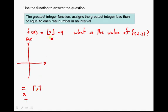But let's take a look what this means. And basically it says that greatest integer function assigns the greatest integer less than or equal to each real number in an interval. So I know there's a whole bunch of words here, but the best way to view this or to think about this is through the number line. And I love a number line. I come back to the number line all the time.